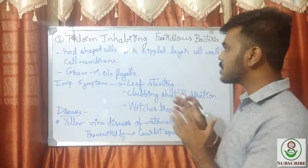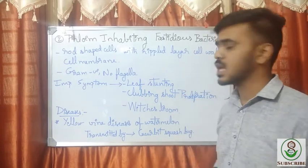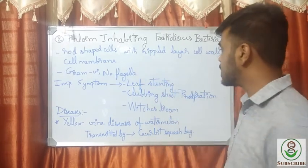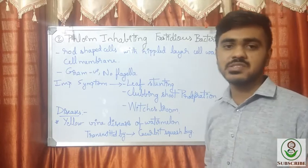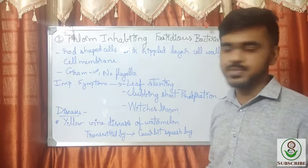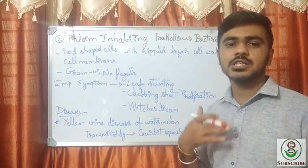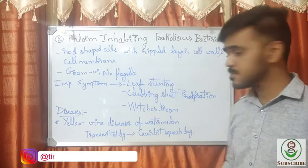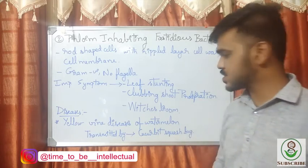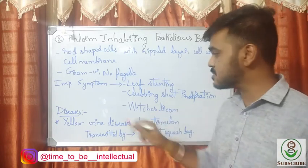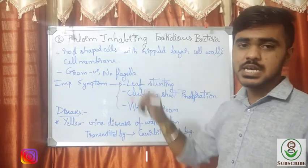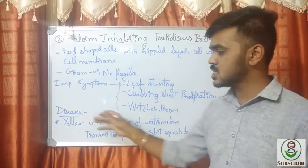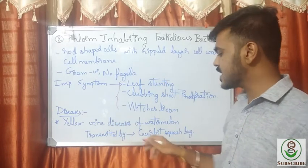The second subgroup under fastidious vascular bacteria is phloem-inhabiting fastidious bacteria, or PIFB. Similarly, they have rod-shaped cells with a rippled layer cell wall and cell membrane, are gram-negative, and have no flagella. Important symptoms include leaf stunting, leaf curling, shoot proliferation, and bushy growth shown by affected plants.